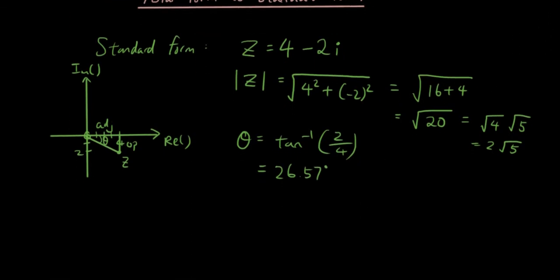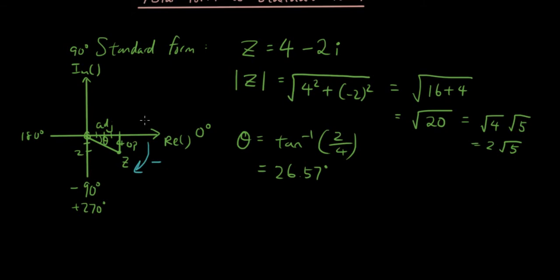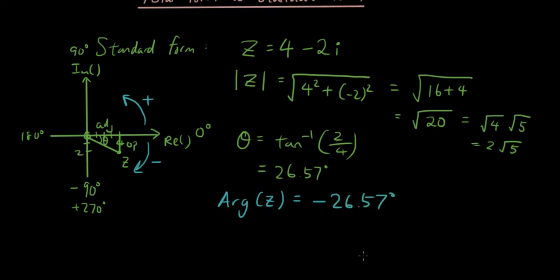Now the argument of z refers to the rotation from 0 degrees to where z is. Because we usually go anti-clockwise it's positive — 0, 90, 180, and so on. But because we're going clockwise here, we go in the negative direction. So instead of positive 270, we go in the clockwise direction which is negative. So the argument of z is negative 26.57 degrees.